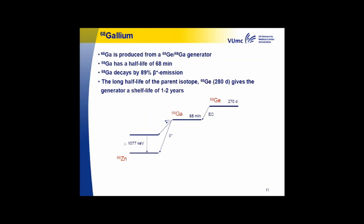Indium-111 is a SPECT isotope that can also be produced in a cyclotron. It has a comparable half-life to gallium-67, but has only two main gamma energies.